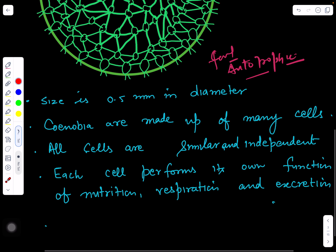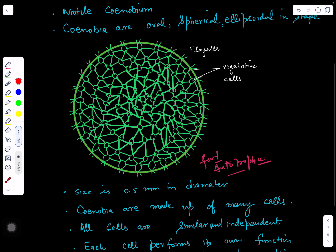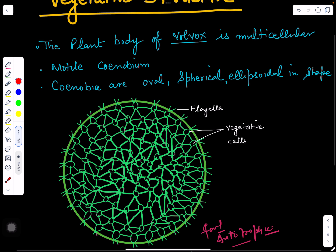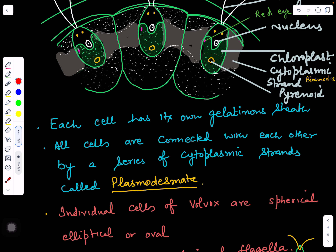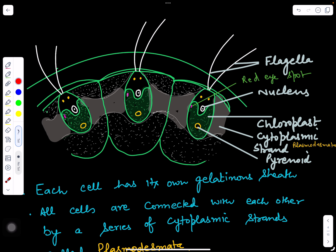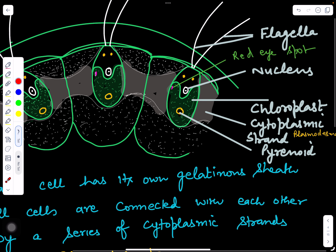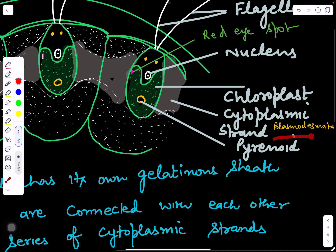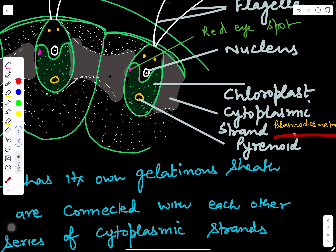The cells of Volvox are connected with each other. Looking at how they connect — this is one cell and this is another cell — they are connected by cytoplasmic strands. These connections are called plasmodesmata connections or plasmodesmata.